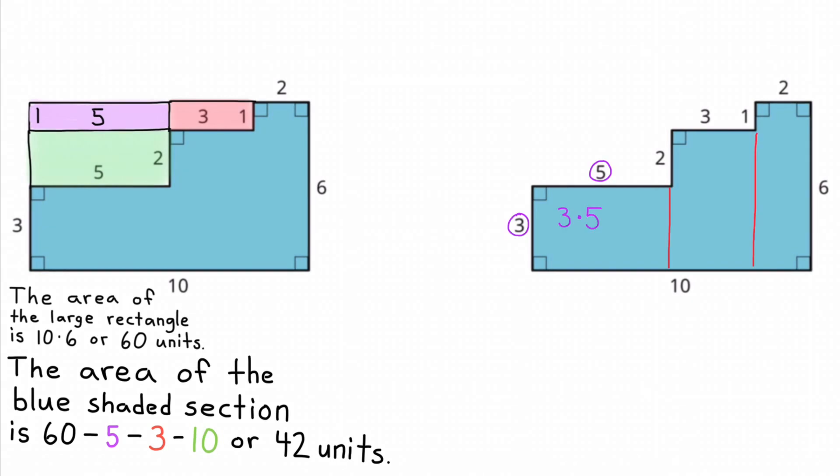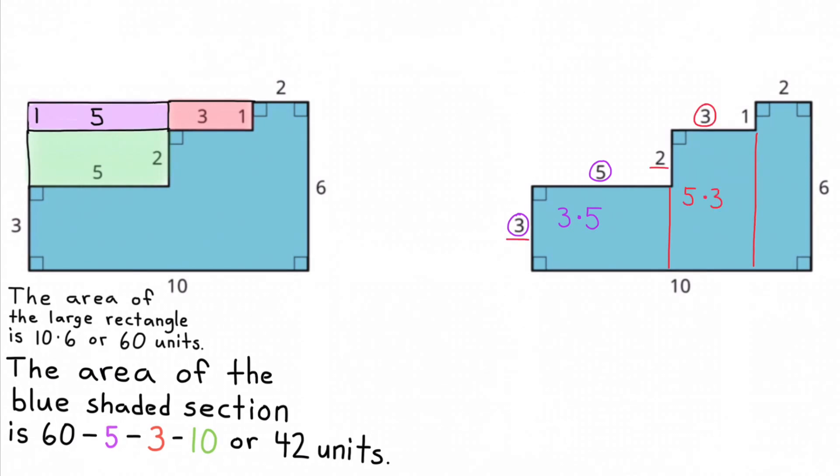Now I've broken down the shape into 3 quadrilaterals. The quadrilateral on the left has the dimensions of 3 times 5. The quadrilateral in the middle has dimensions of 5 times 3. And the quadrilateral on the right-hand side has dimensions of 2 times 6.